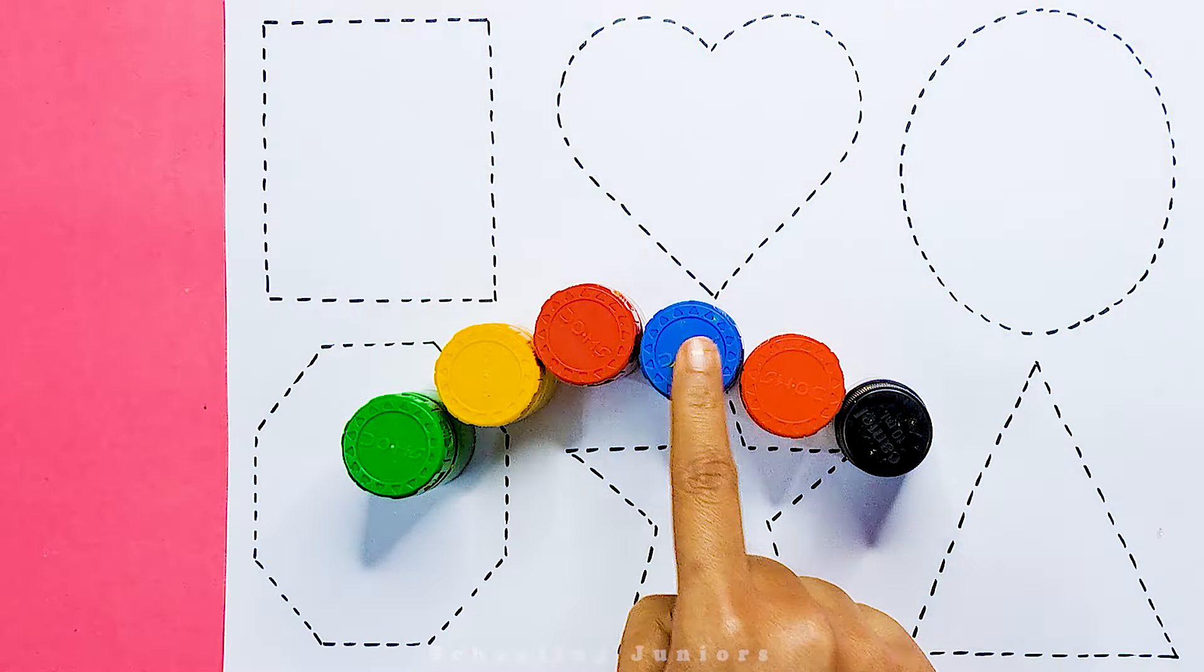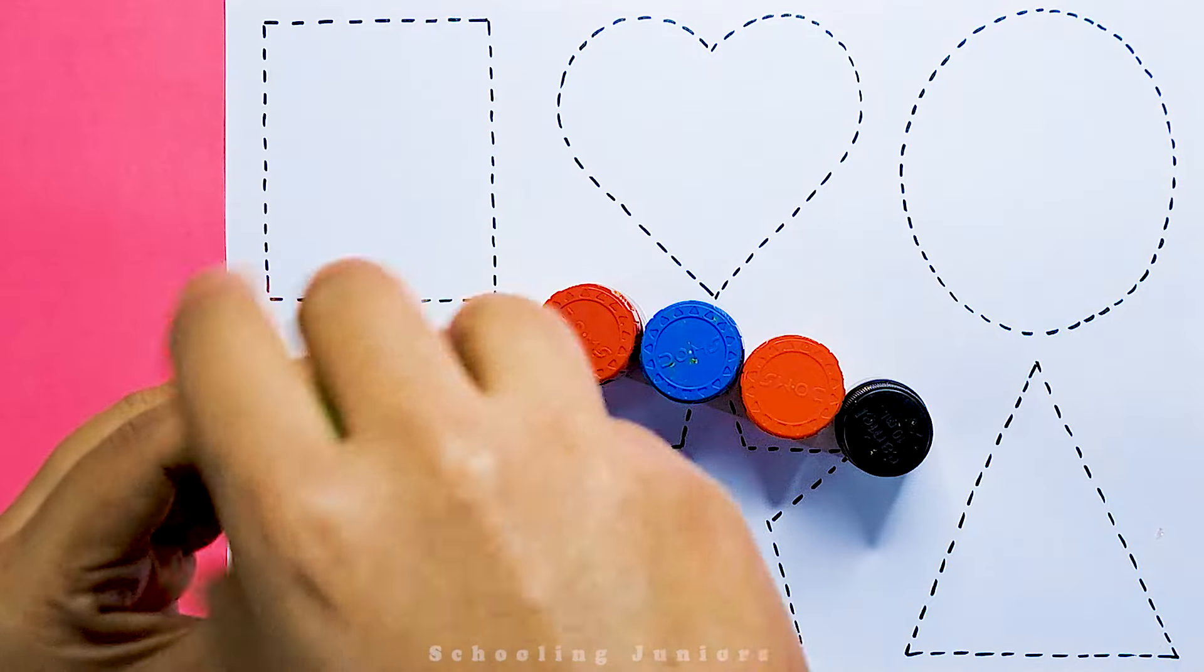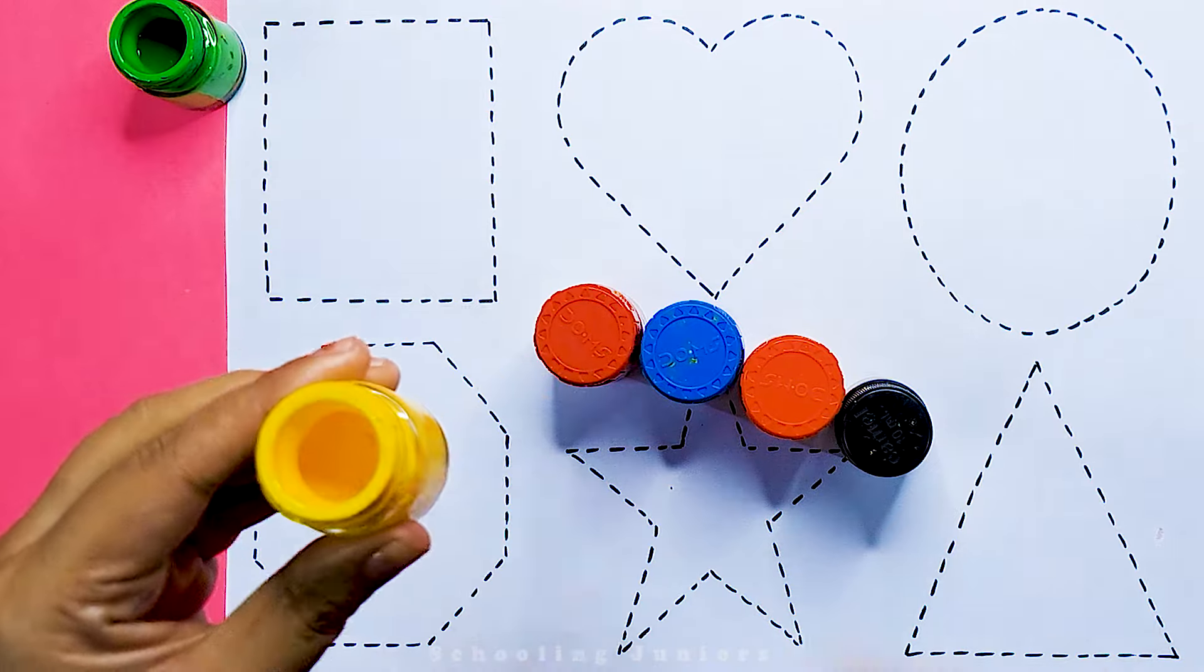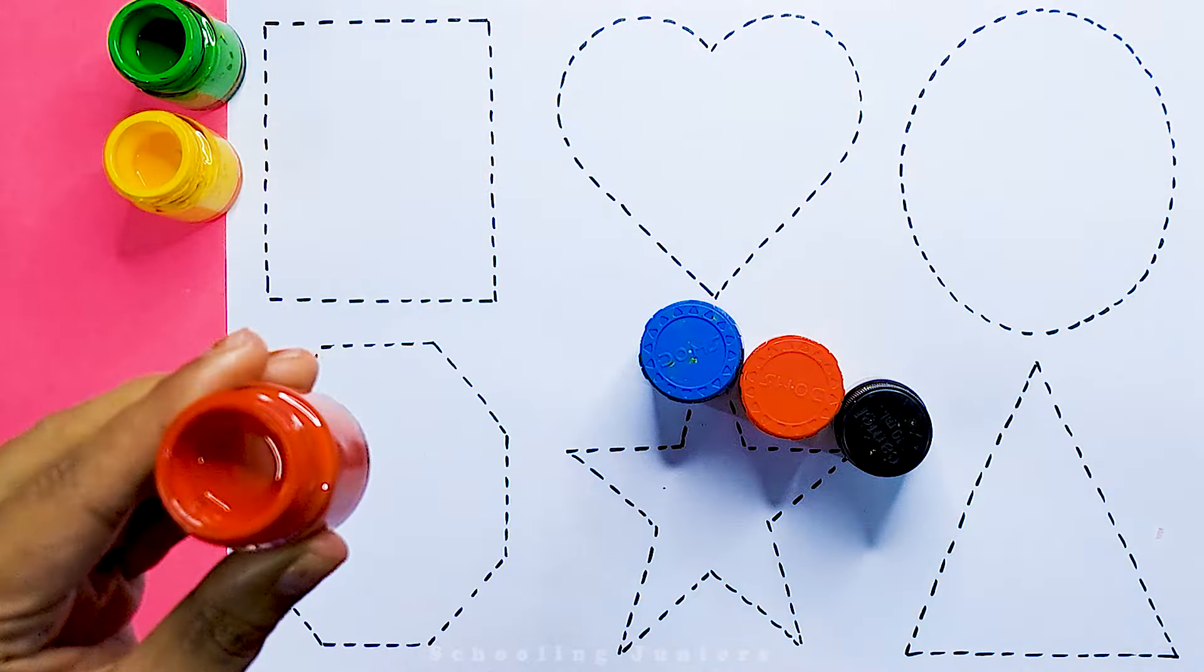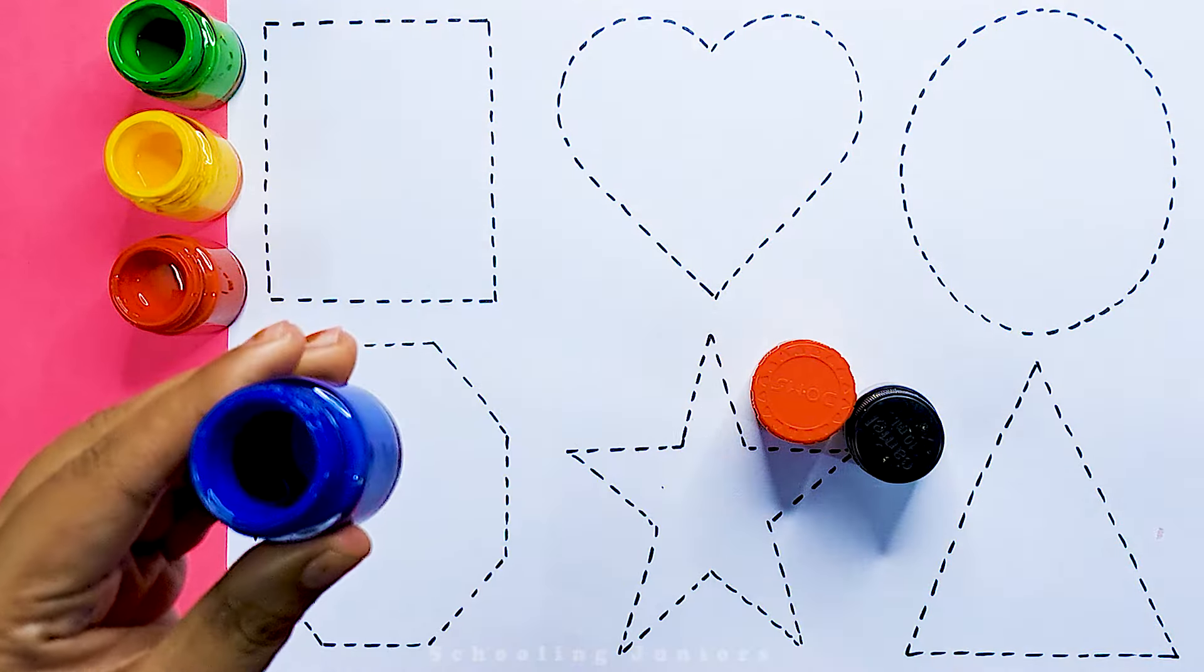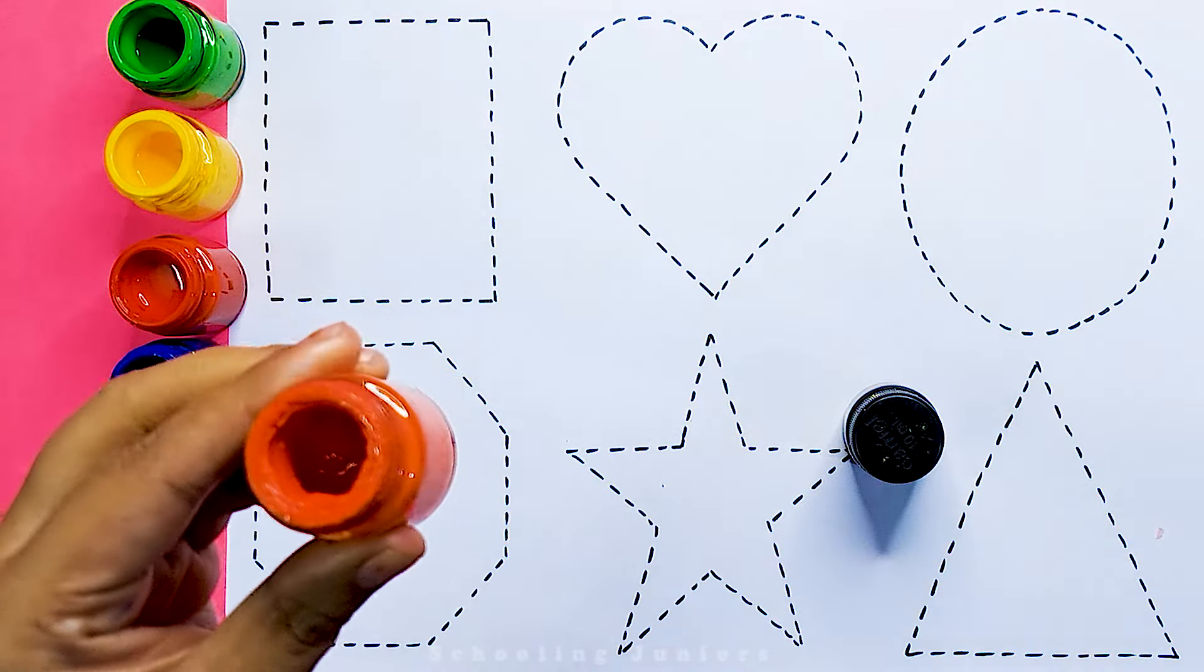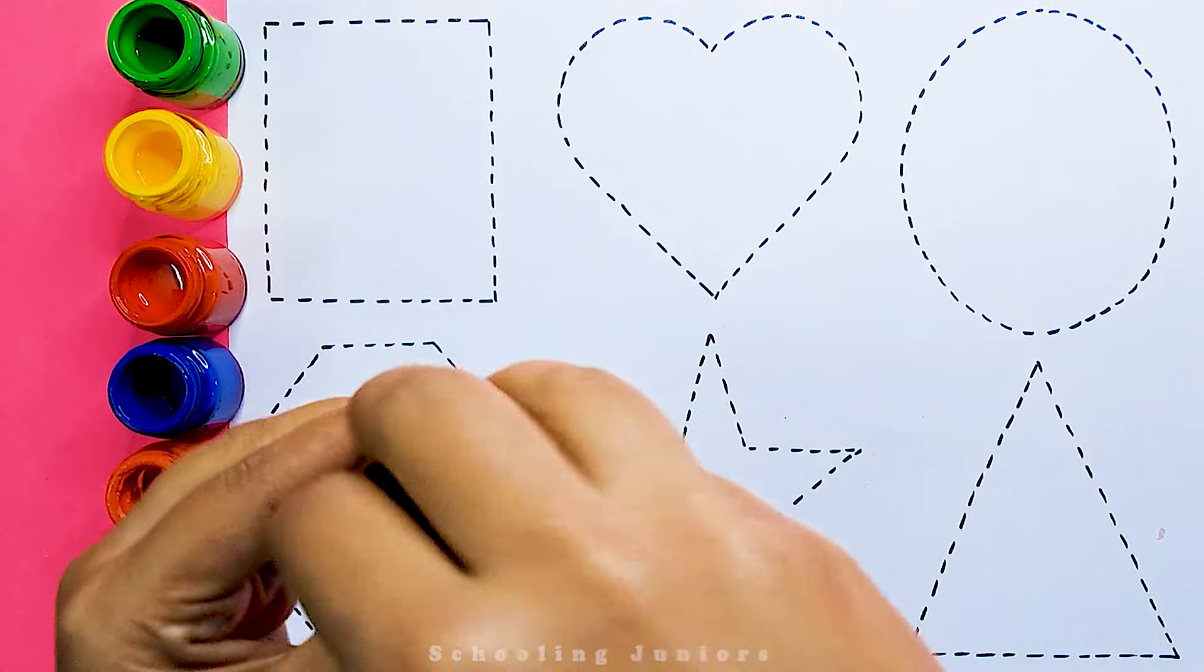This is our lovely colors. This is green color. This is yellow color. This is red color. This is blue color. This is orange color. This is black color.